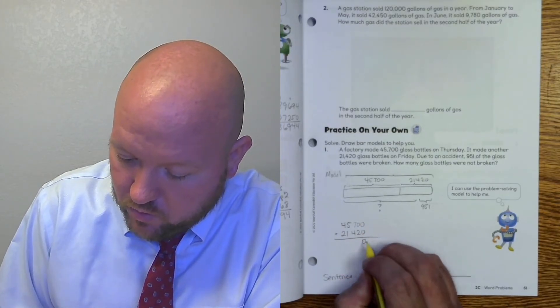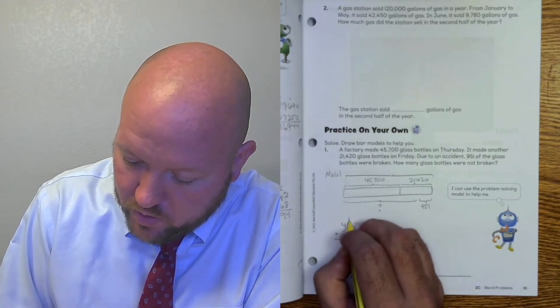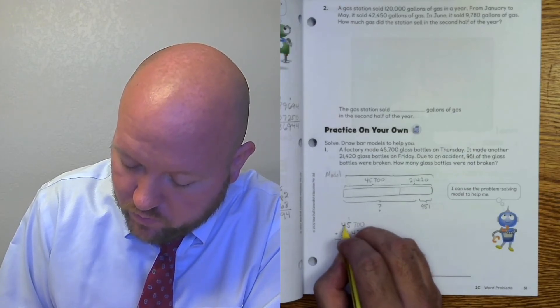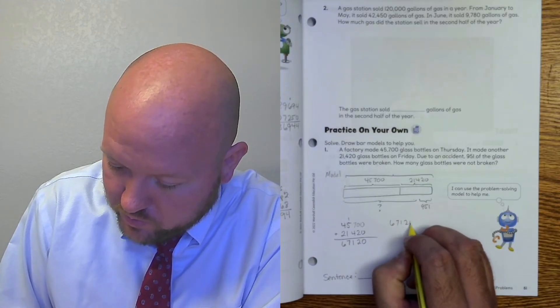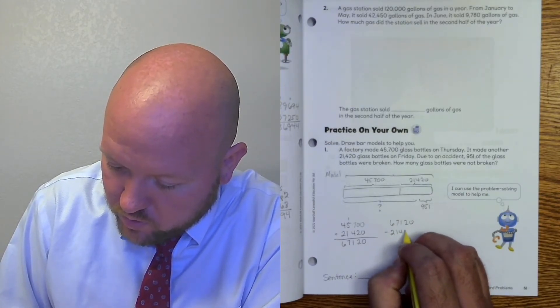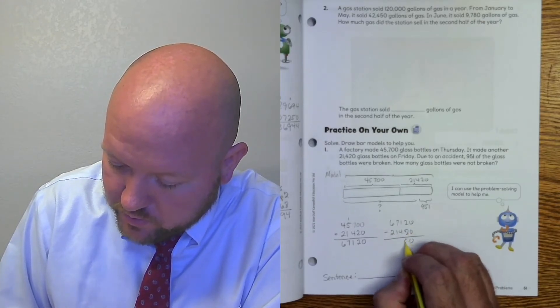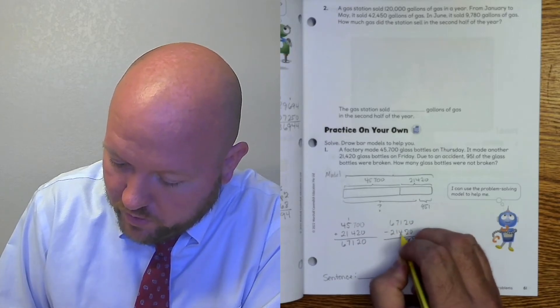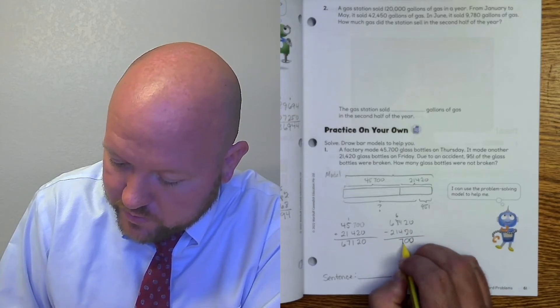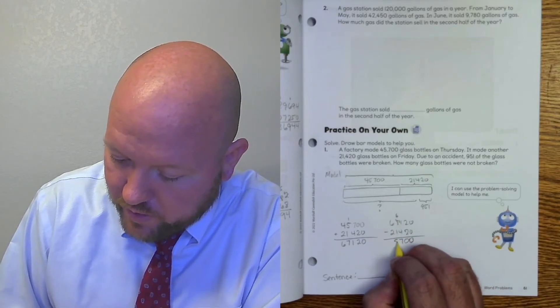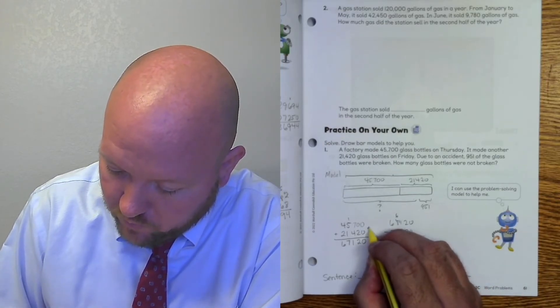So the first thing I need to do is figure out how many bottles were made. To do that, I'm going to ignore down here and I'm going to add my two parts. That's going to give me my total bottles. So I have 45,700 and 21,420. I'm going to add those together. 0 plus 0 is 0. 0 plus 2 is 2. 7 plus 4 is 11. 1 plus 5 plus 1 is 7. 4 plus 2 is 6. Let's check that. 67,120 minus 21,420. 0 minus 0 is 0. 2 minus 2 is 0. 1 minus 4. I have to regroup. This becomes a 6. This becomes an 11. 11 minus 4 is 7. 6 minus 1 is 5. 6 minus 2 is 4. And those two check out.